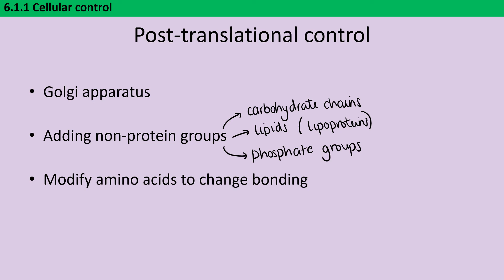Alternatively, we can modify the particular amino acids. And in doing this, we can influence the bonding. So, for instance, the amino acid cysteine is particularly good at forming disulfide bridges. And this can really influence the tertiary structure of a protein. So, by substituting in a cysteine amino acid, we can really change the shape of that protein.